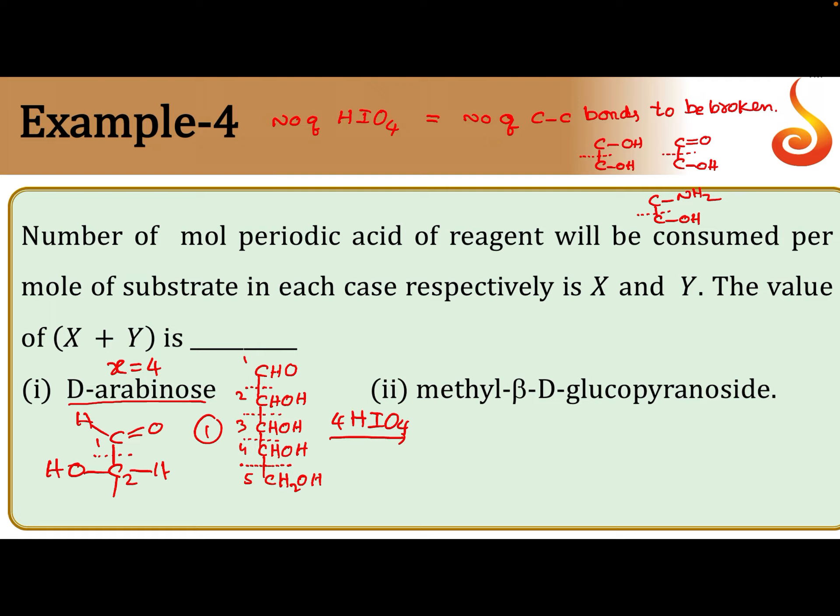Next one, methyl-β-D-glucopyranoside. Methyl beta - since beta, OH is above. That OH is converted into methoxy. At this anomeric carbon, OCH3 above. At second carbon, OH down. At third carbon, OH up. At fourth carbon, OH down. At fifth carbon, CH2OH up. So now this is methyl-β-D-glucopyranoside.